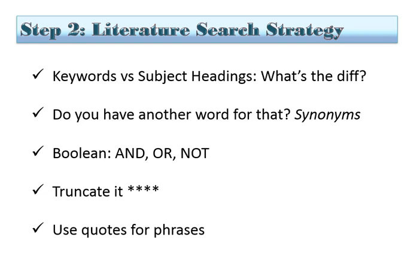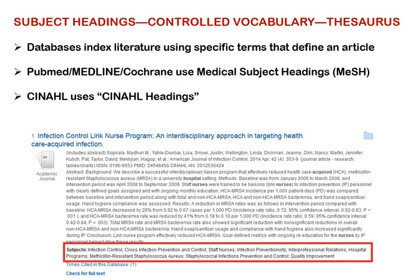A couple of things to consider when setting up your search are how you're going to input those terms into your search boxes in the database, and what other parameters you might add. One thing to consider is keywords versus subject headings. Keywords are terms you typically enter into a database as natural language, as you would in a Google search, whereas subject headings are those used by the databases themselves as a controlled vocabulary list or thesaurus.